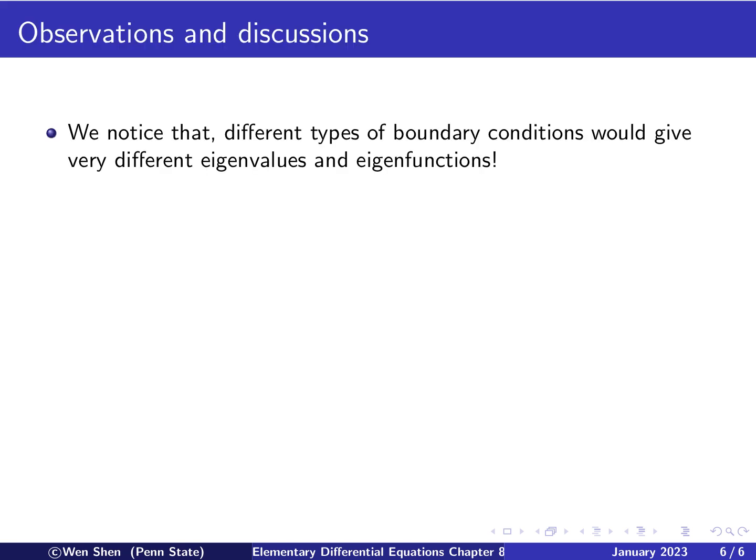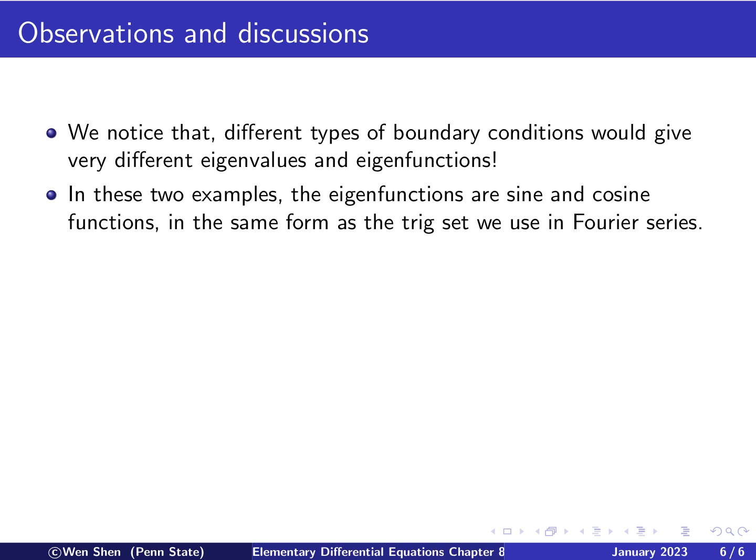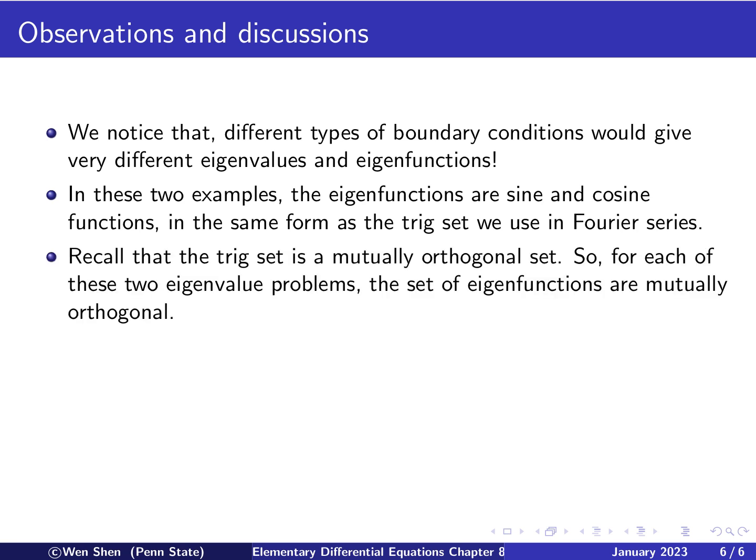Okay, so let's make some observations and discussions. So first, we note that boundary conditions are important, and the type of boundary conditions, different ones will give us very different eigenvalues and eigenfunctions. And in these two examples we have had, the eigenfunctions are sine and cosine functions in the same form as the trig set that we used in Fourier series. So let's recall what we learned in Fourier series about the set of functions that we used. We know that these functions are called mutually orthogonal. That means two different functions in the set are orthogonal to each other, and the inner product will be zero for them.